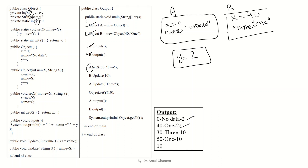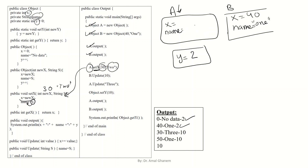Next we call a.set(30, "2"). We go to object a and call the set method, sending 30 for newX and "2" as the String s. The method saves newX into x, so x becomes 30, and saves s into name, so name becomes "2". We have now changed the values of x and name for object a.